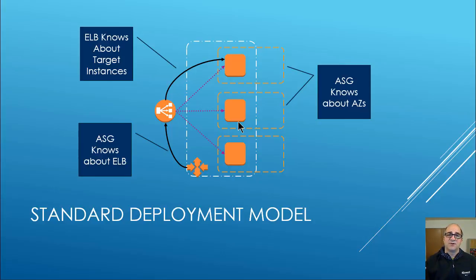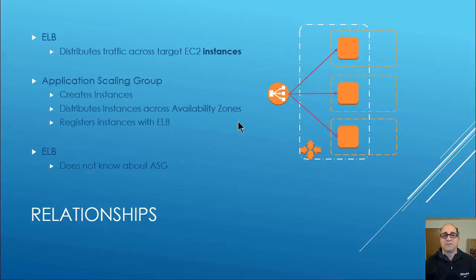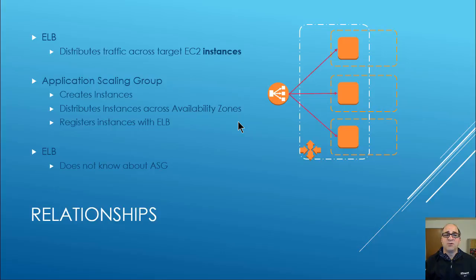The autoscale group knows how to create and destroy instances and where to register them. The ELB distributes traffic across EC2 instances — it doesn't do it across zones really, just across the instance pool, though you have some tweaks you can do there. The autoscaling group creates the instances, distributes them across zones, and registers them with the ELB. The ELB does not know anything about the autoscale group.